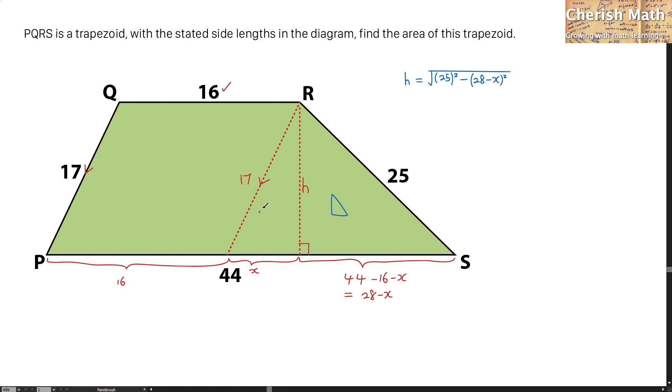And that is the same thing by using the theorem again. And h is equal to the square root of 17 squared minus x squared.